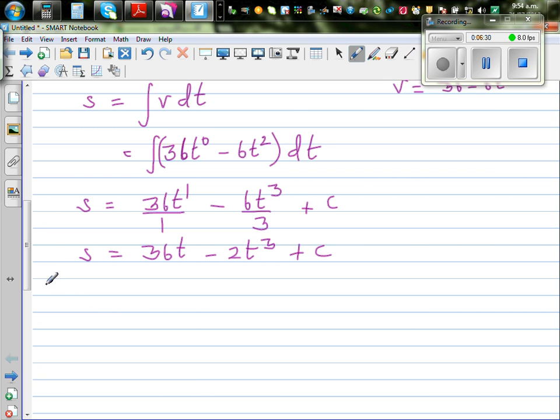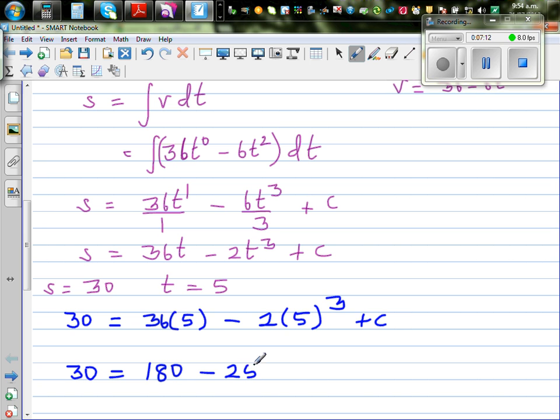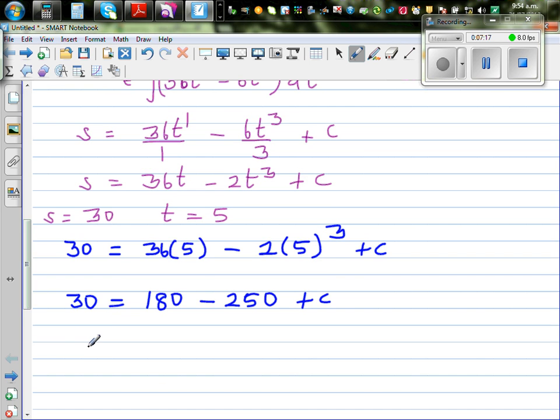Now to figure out C, we have got S is given to be 30 when T is 5. So let us put T as 5 and S as 30. So 30 is equal to 36 times 5 minus 2 times 5 cubed plus C. So 30 is equal to, what is 36 times 5? So this is 150 and 30, which is 180, minus this is 125 times 2 is 250. So 30, this is minus 70 plus C. Your C, this implies your C is 100.